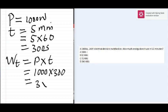3 × 10^5 joules. So the electrical energy used in five minutes is 3 × 10^5 joules.